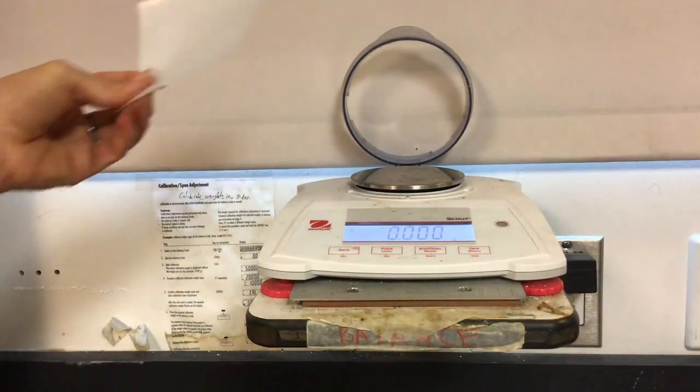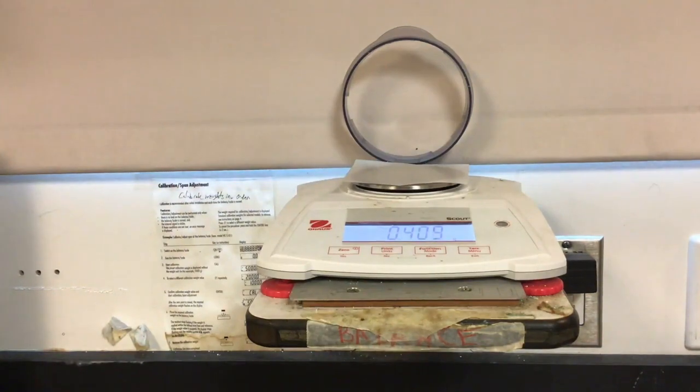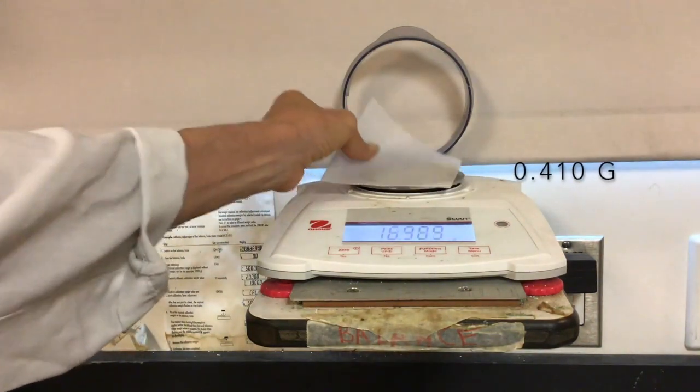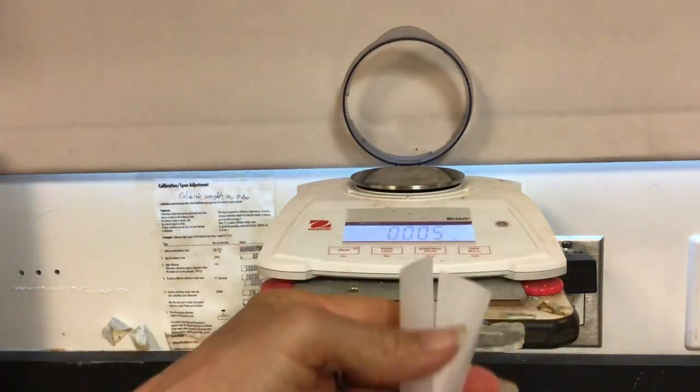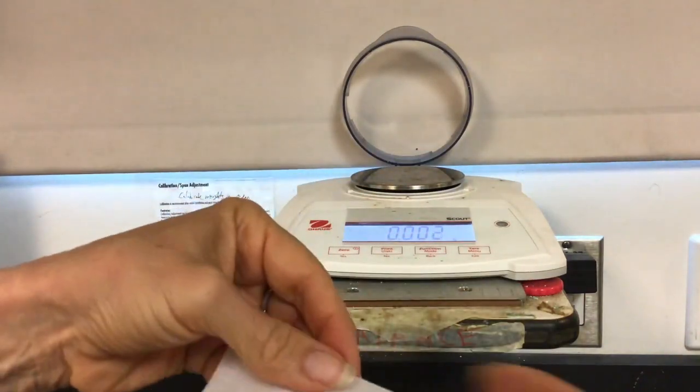I'm going to start by weighing my weighing paper, and that weighs 0.410 grams. I'm going to fold my weighing paper into quarters so it can make an indentation at the bottom.